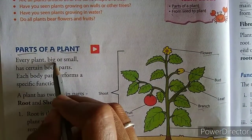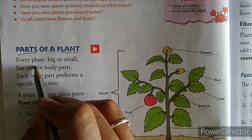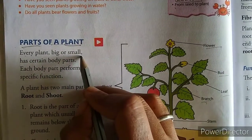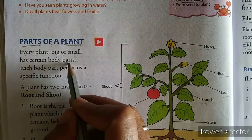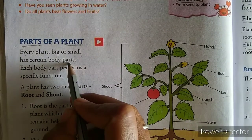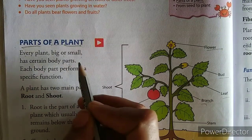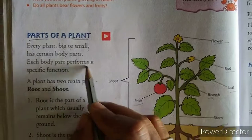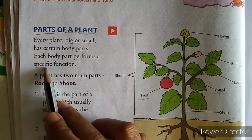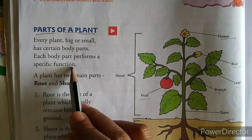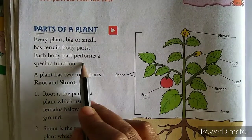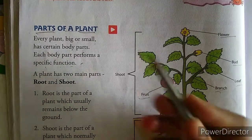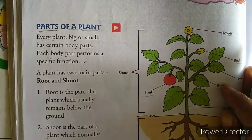Every plant, big or small — har plant ya to big hota hai ya to small hota hai — has certain body parts. All scale, kai body parts bhi hote hain. Each body part performs a specified function, aur har body part ka ek function hota hai.